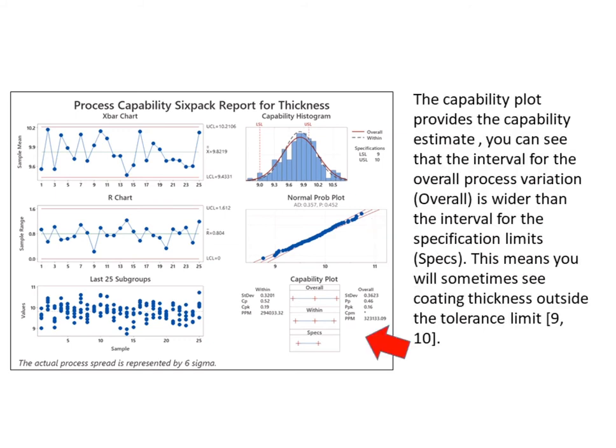The capability plot provides the capability estimate. You can see that the interval for the overall process variation is wider than the interval for the specification limits. This means you will sometimes see coating thickness outside the tolerance limits of 9 to 10.